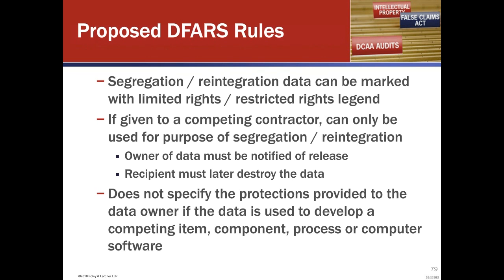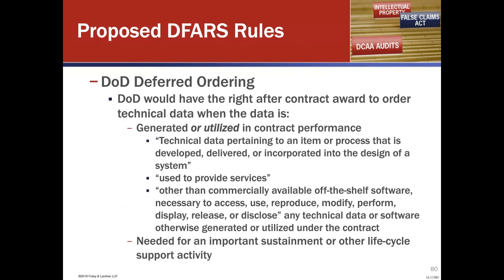The proposed rule also expands the government's deferred ordering rights. Before, for the DFAR, it was data and computer software that was 'generated in the performance of the contract' that the government could order. Now it would be 'generated or utilized in contract performance.' Utilized — so if you utilized it in your contract performance, they could order it under the deferred ordering clause, regardless of whether that's your crown jewel of IP. They have to meet some characteristics: it needs to be important for sustainment or other life cycle activity — a fairly low standard.